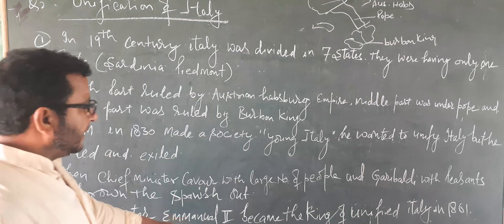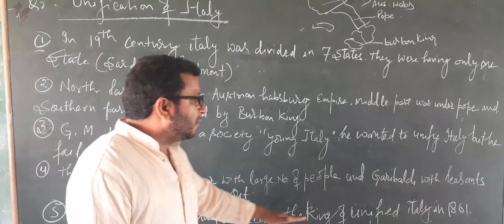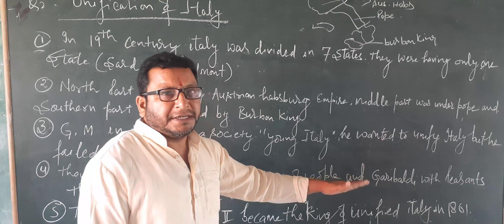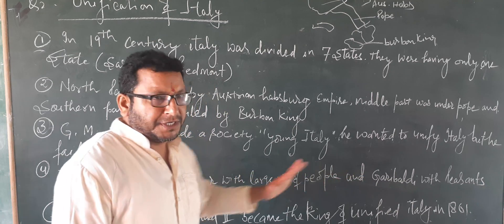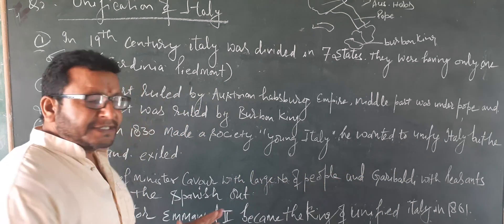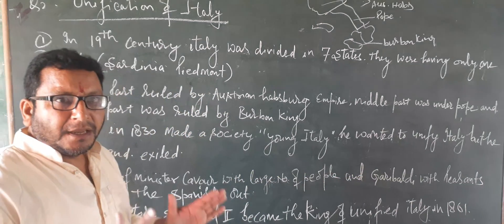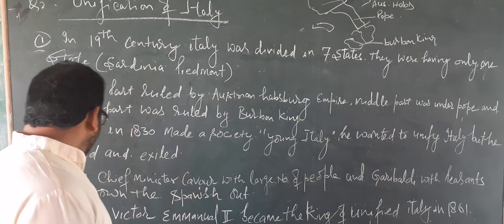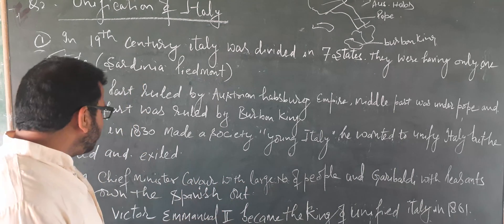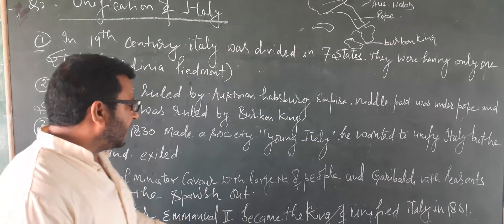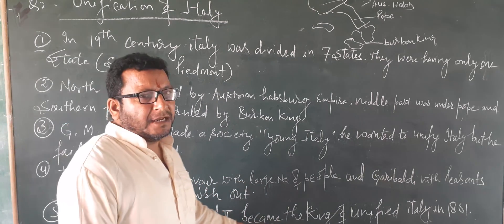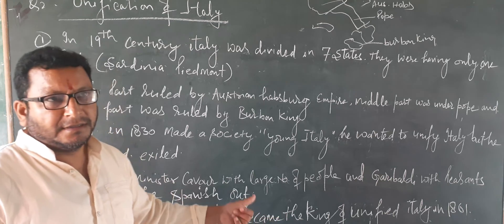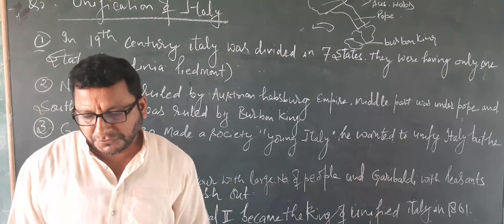Then Victor Emmanuel II became the king of unified Italy in 1861. In 1861, Italy became a unified country, and Victor Emmanuel II became the king of unified Italy. That's all.